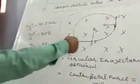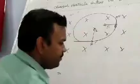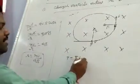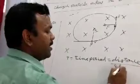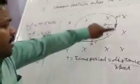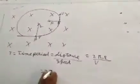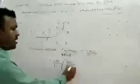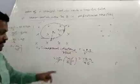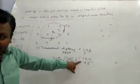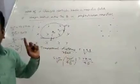Now for time period. You know time period is the distance upon speed. What is distance? The total path length in one rotation means 2πr. Speed is v, so time period equals 2πr/v. Put the value of r equals mv/qB. This gives time period equals 2πm/qB. This means the time period does not depend upon velocity. This is an interesting fact that the time period of the charge particle will not depend upon its velocity.